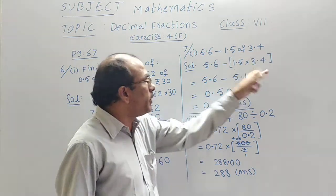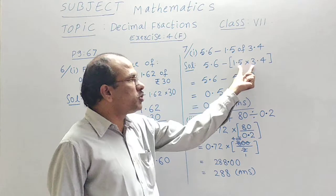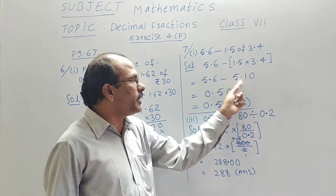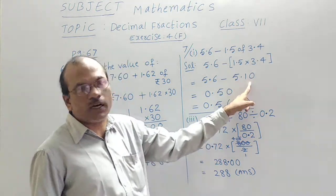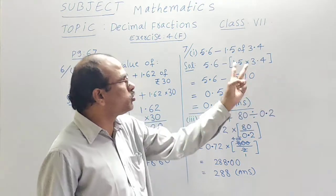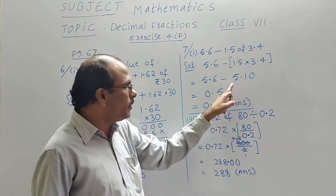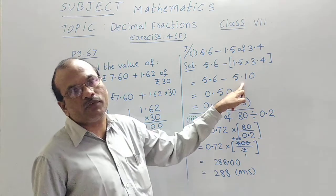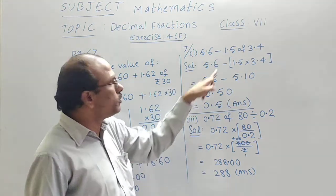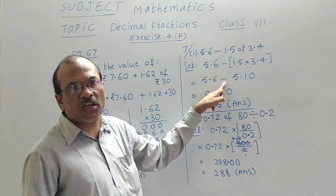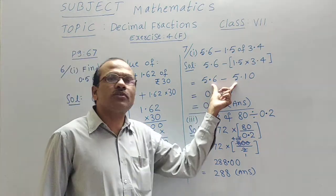5.6 minus 1.5 of 3.4. Separately arrange in a bracket that part. Because these two should multiply to get one answer, that is 5.10 we got answer. In the rough we have to multiply these two numbers. Then answer will be 5.10. That is as it is dropped. Minus symbol same taken.